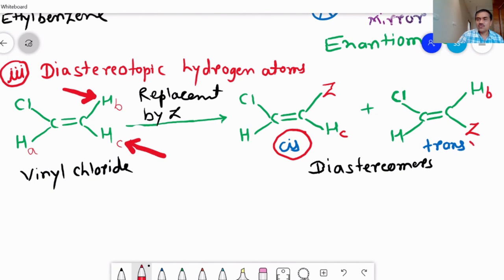When we replace the HC by Z group, we got the trans example. So the relationship in between cis and trans is geometrical isomerism, and hence they are diastereomers. And such type of protons is called diastereotopic hydrogen atoms.